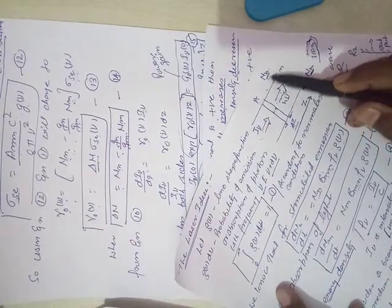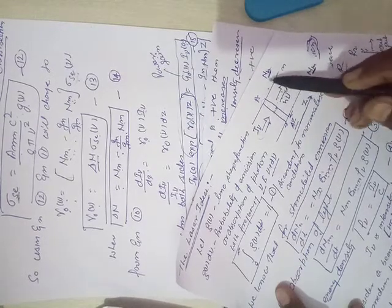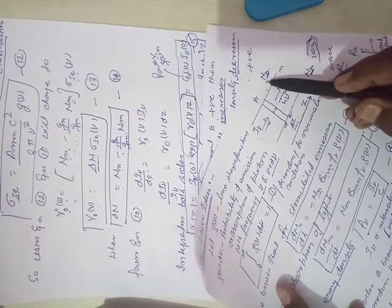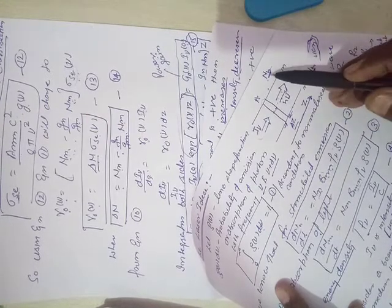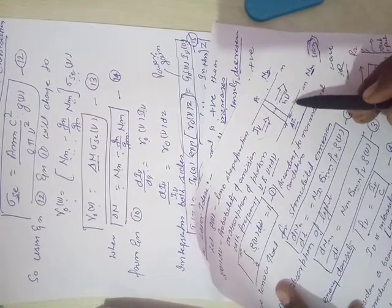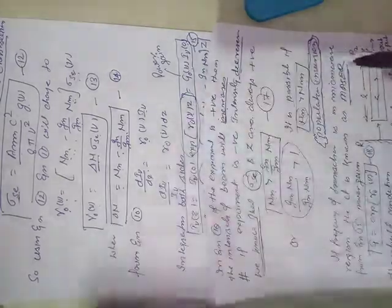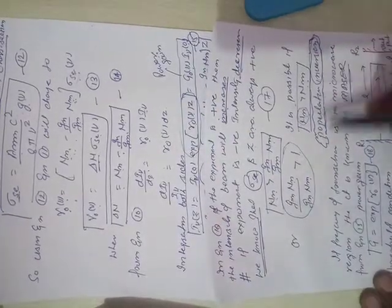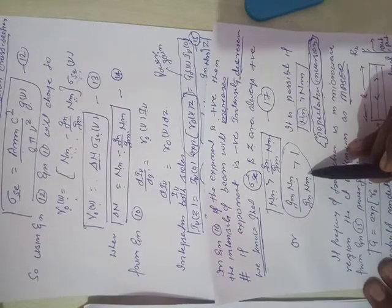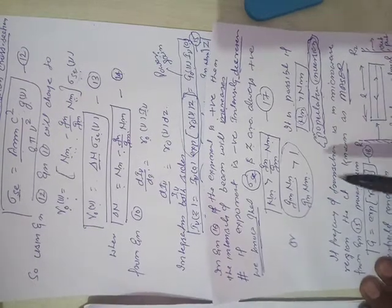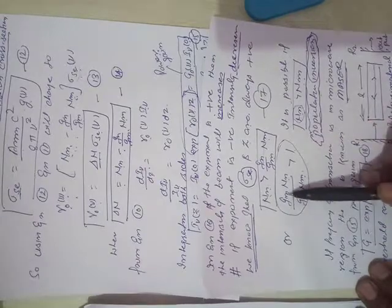But if the atoms, ions, N_n is greater than N_m, means if the number of atoms and ions here is more compared to the ground state, that situation we call population inversion. Population inversion is the necessary condition for laser action. Now, if we follow this process, emission...